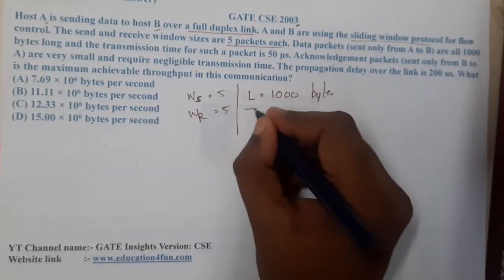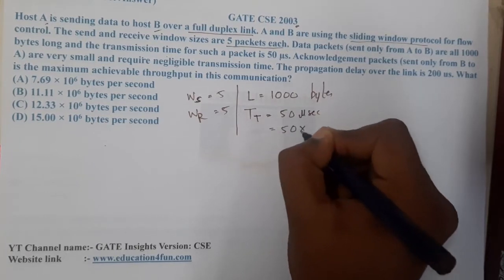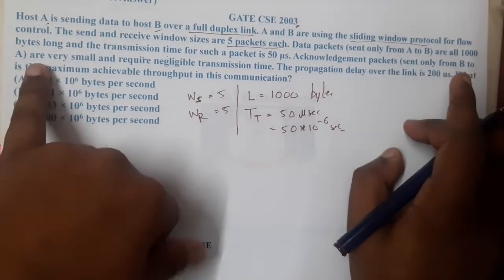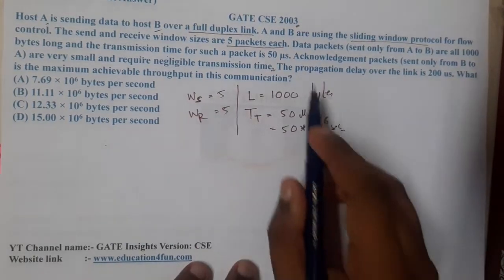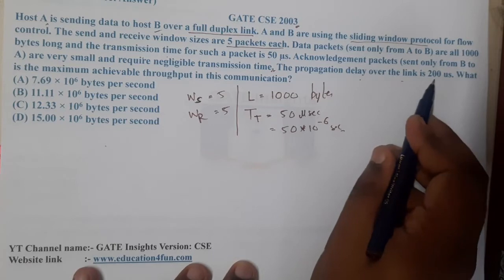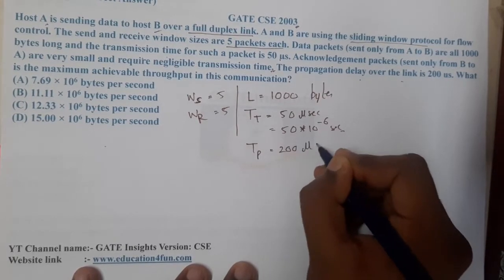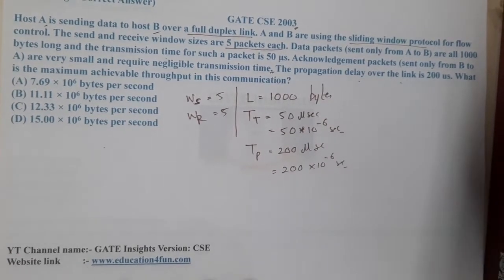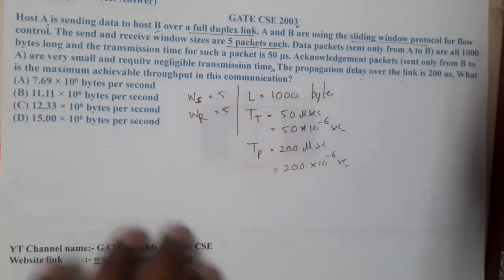The transmission time TT is 50 microseconds, that is 50×10⁻⁶ seconds. Acknowledgement packets sent only from B to A are very small and their transmission time is negligible. The propagation delay TP is 200 microseconds, that is 200×10⁻⁶ seconds. The question asks: what is the maximum achievable throughput?